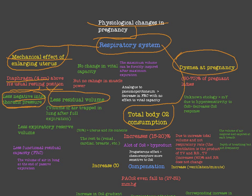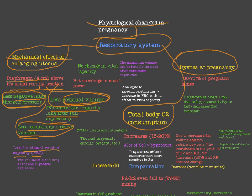We also have less residual volume due to the same cause. Residual volume is the volume of air trapped in the lung after full expiration. In pregnancy, due to the mass effect of the diaphragm on the lung, there will also be less expiratory reserve volume. Both expiratory reserve volume and residual volume together constitute what we call functional residual capacity, or FRC.